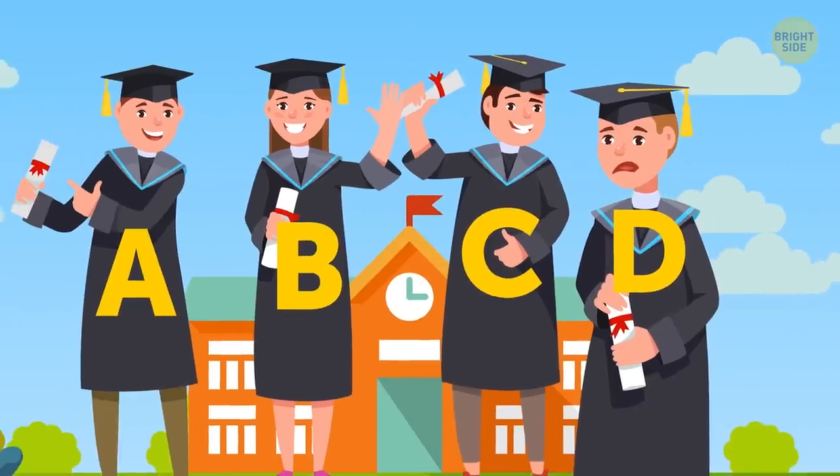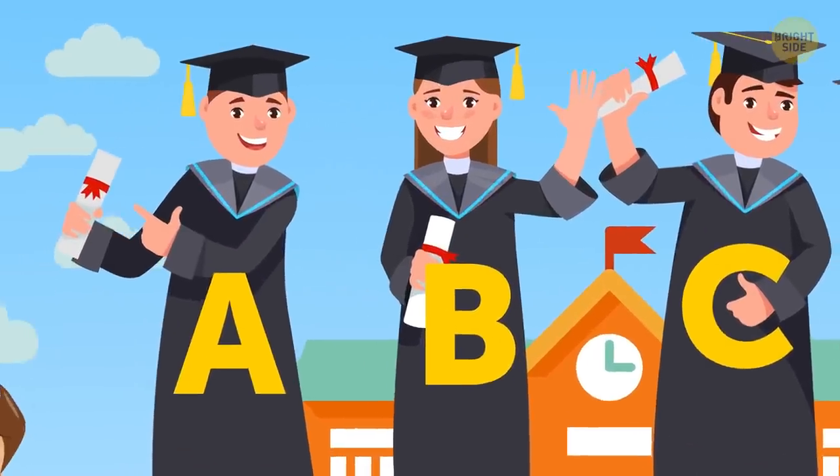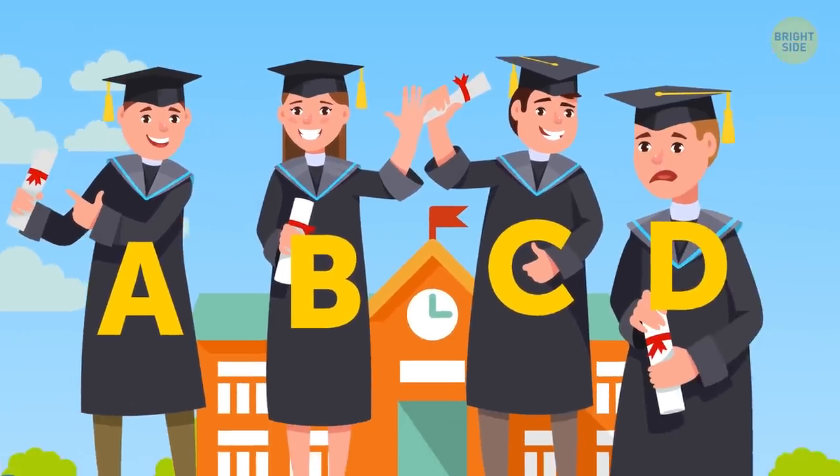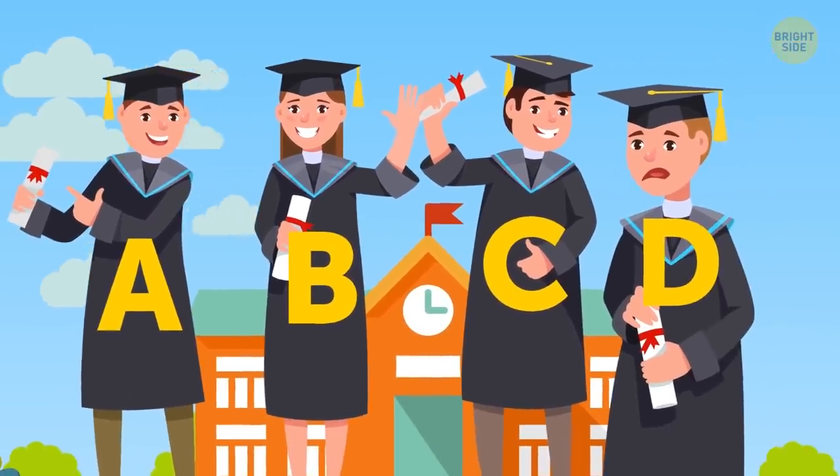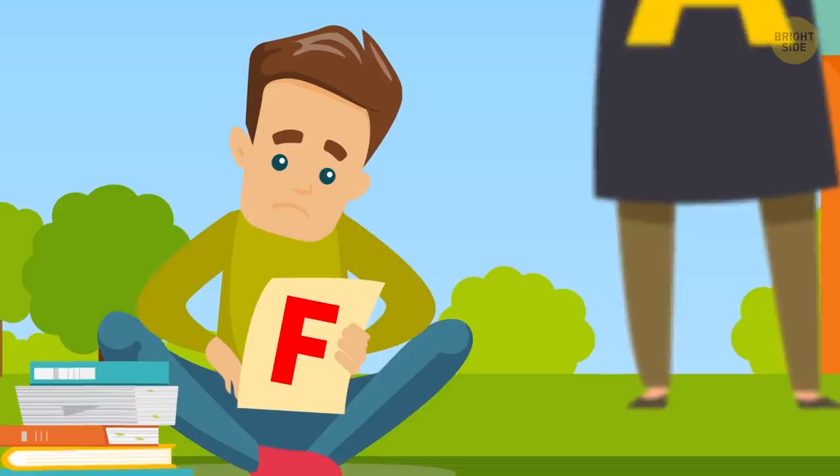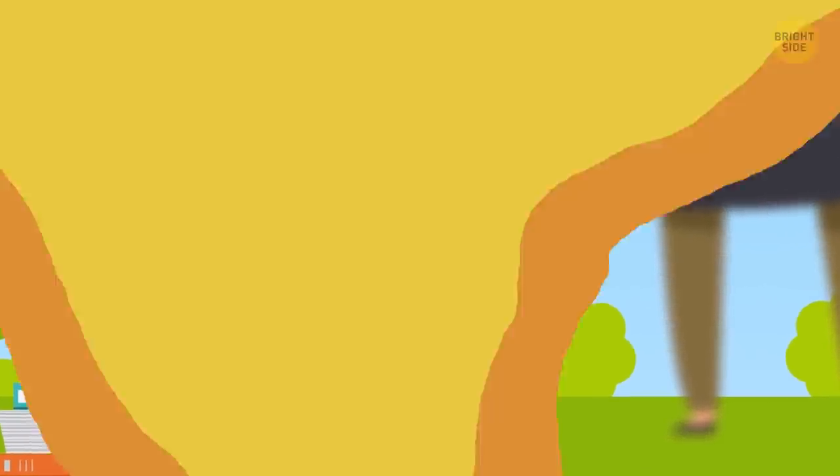So in most schools, if you get an A, B, C, or D, you pass. An F means you failed that class.